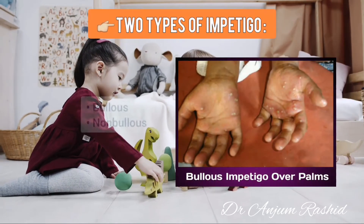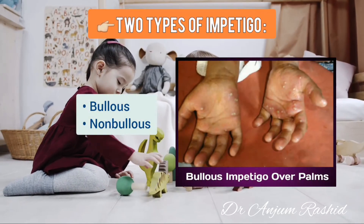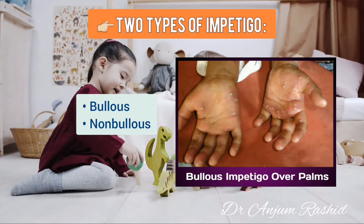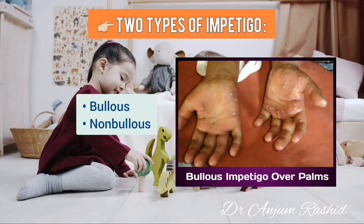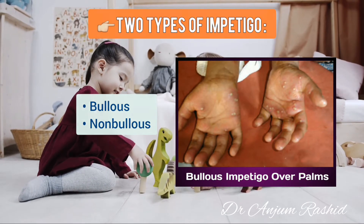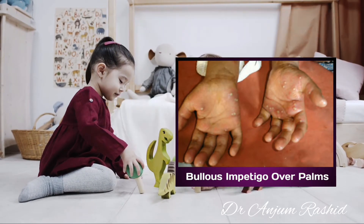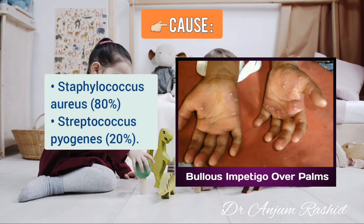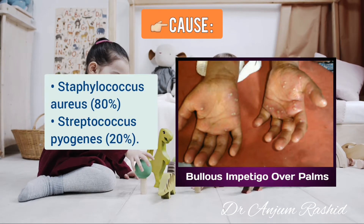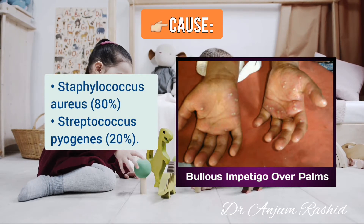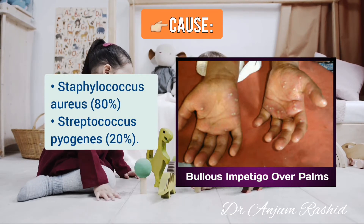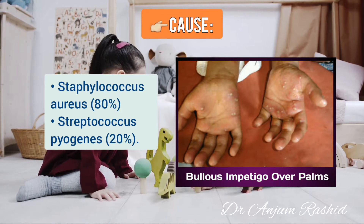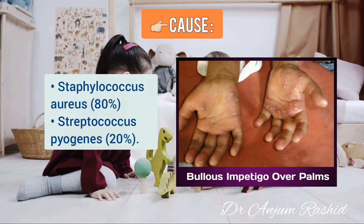Now there are two types of impetigo. First is bullous and the second is non-bullous impetigo. The cause of impetigo is Staphylococcus aureus in 80% of cases and Streptococcus pyogenes in 20% of cases.